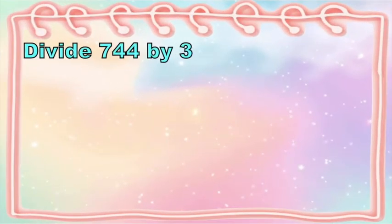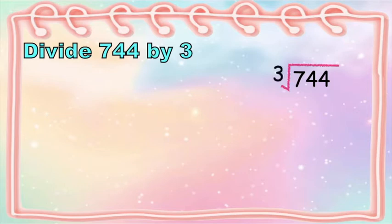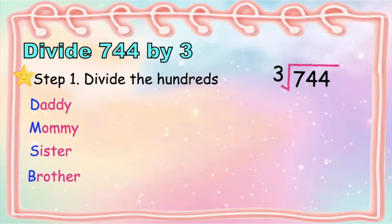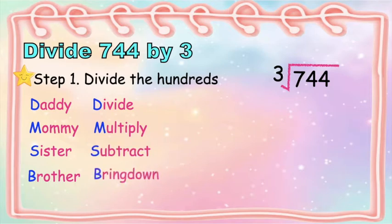Divide 744 by 3. We are going to write it this way: 744 divided by 3. The step 1 in long division is to divide the hundreds. But first, let's have the technique in doing long division. We're going to remember these people: daddy, mommy, sister, and brother. Daddy stands for divide, mommy stands for multiply, sister stands for subtract, and brother stands for bring down. So children, we're going to use the technique: divide, multiply, subtract, bring down. After bring down, go back to divide.